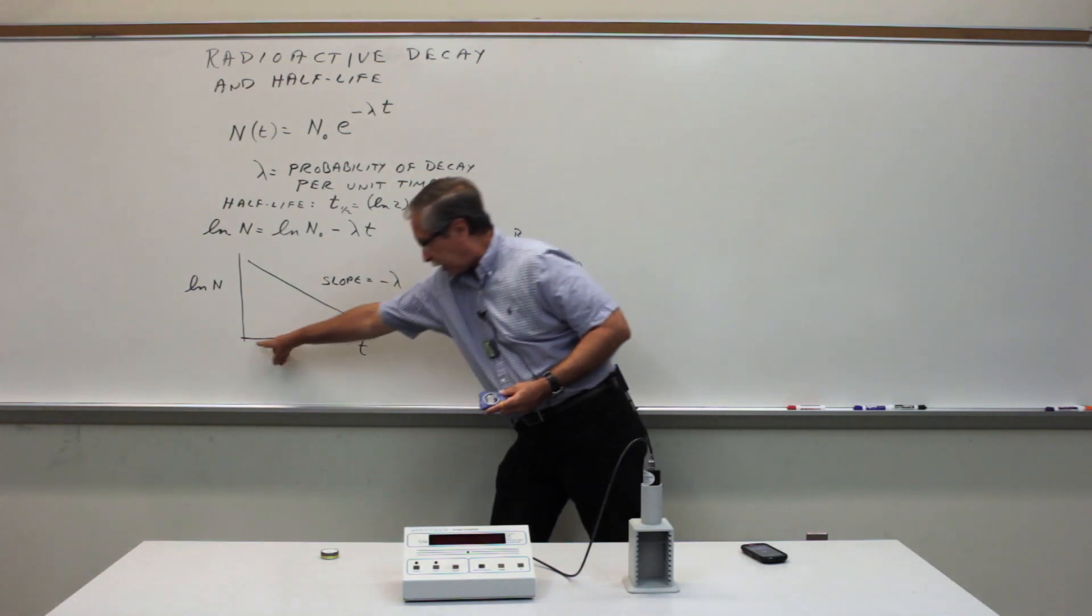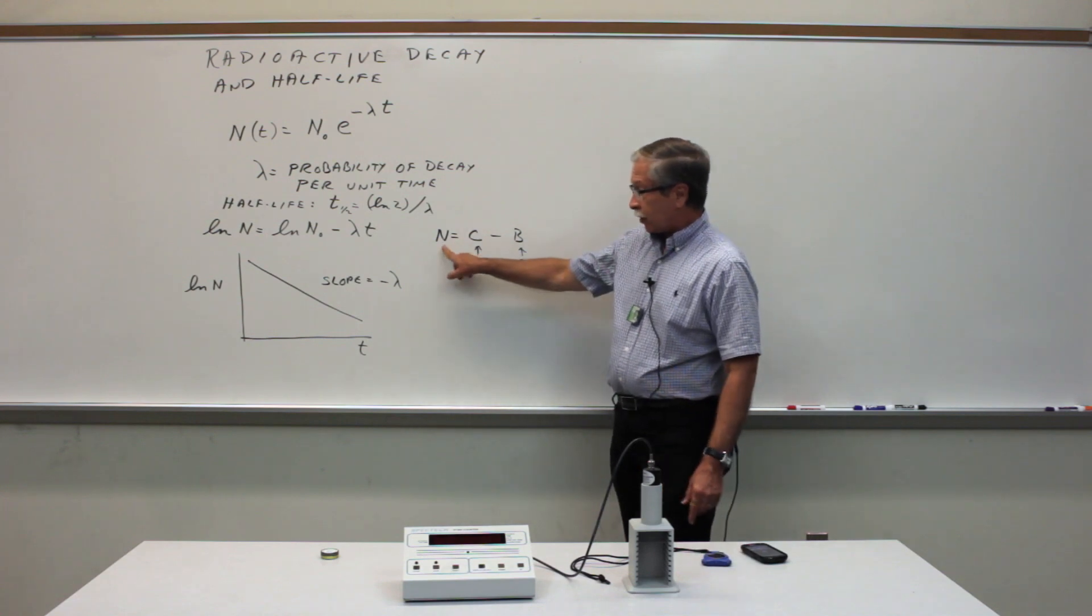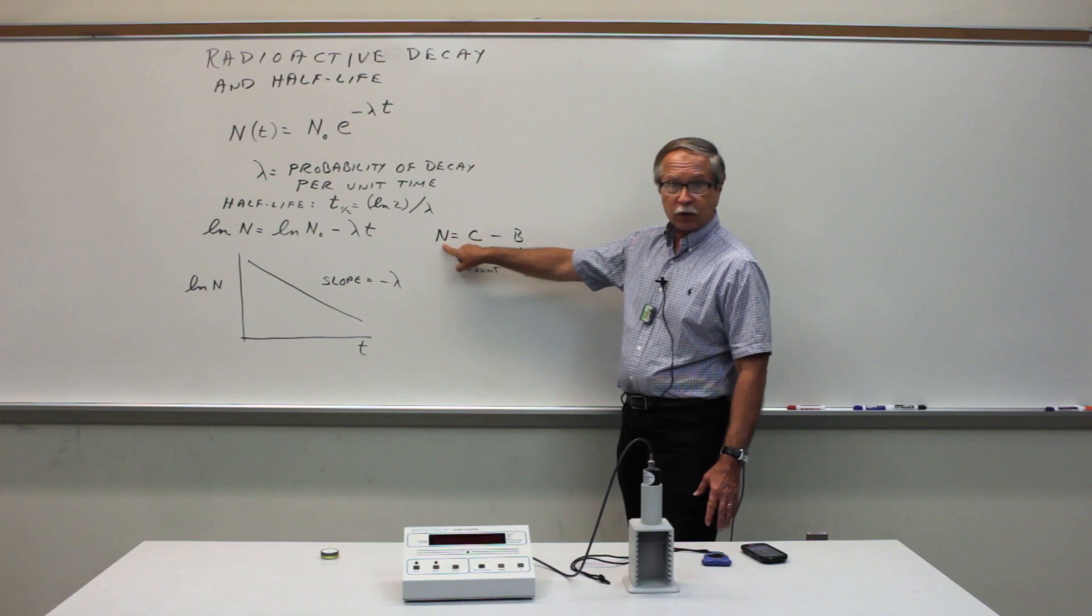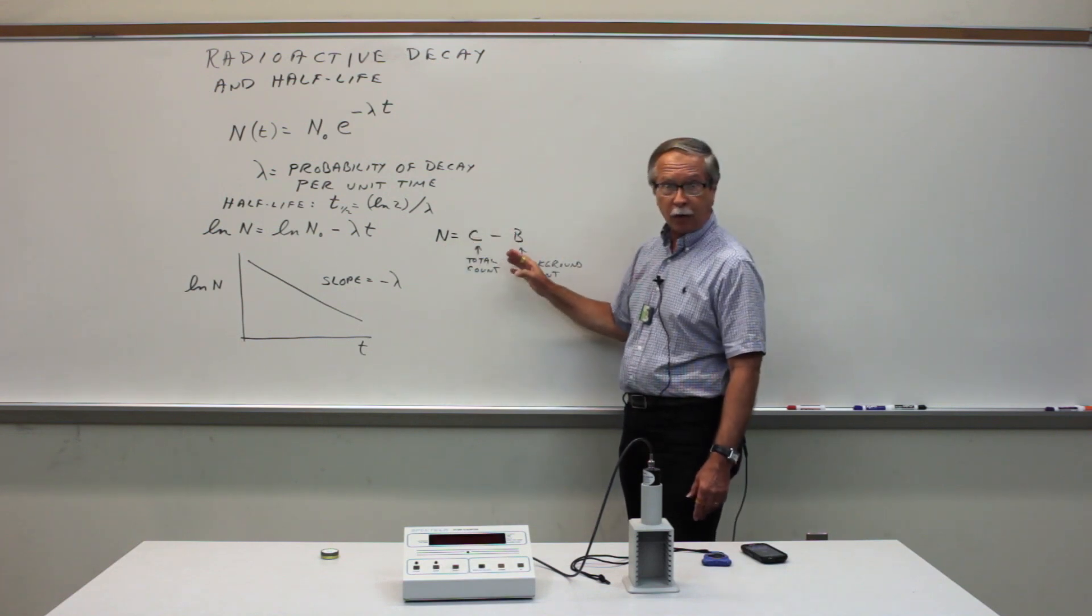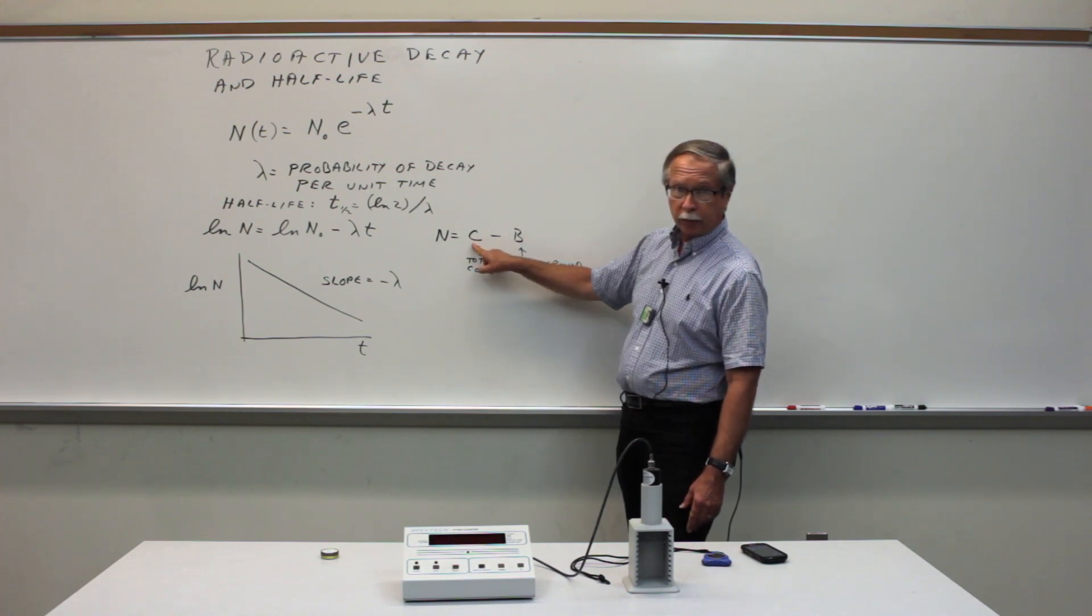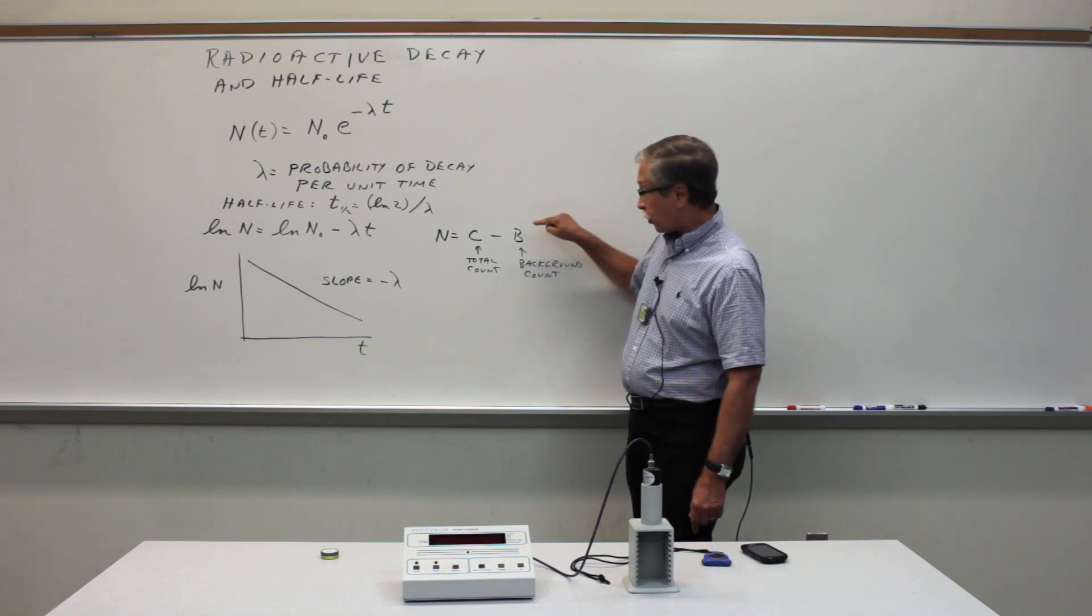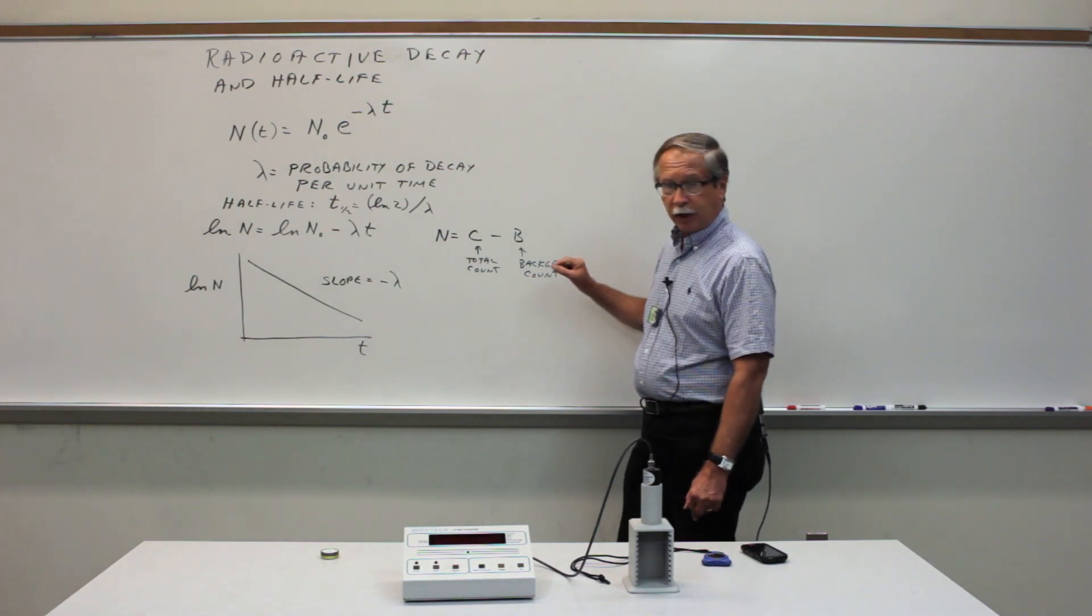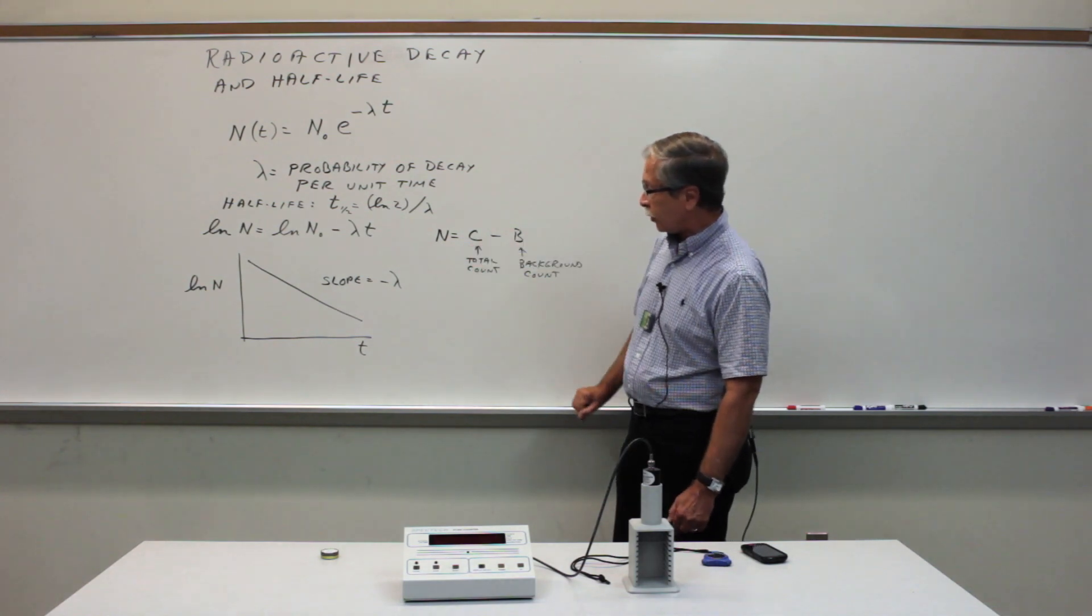Read the stopwatch at the moment that you begin each new counting interval. The other thing to be aware of is that what the Geiger counter records is not the number of decays from the source. It's the number of events that happen from all sources including background. Before you even get your source remember to take an independent measurement of the background count and correct all of your subsequent measurements for background before doing the analysis.